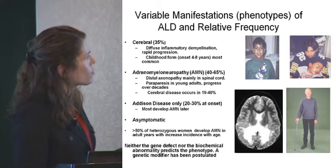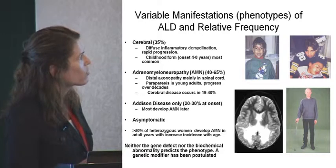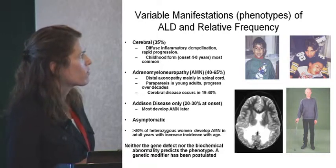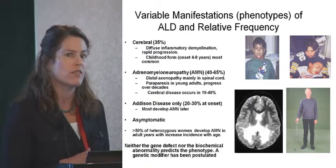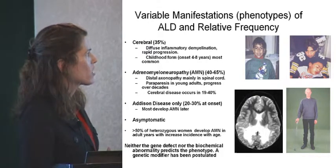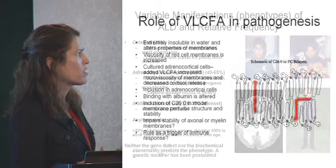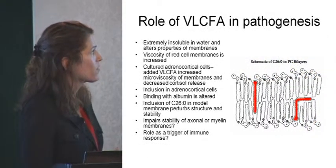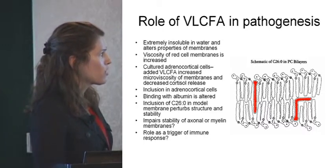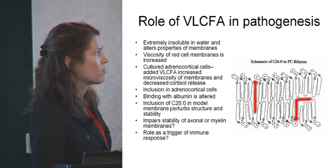Another form is the adult subtype, the adrenal myeloneuropathy, which affects 40 to 45% of individuals. It's more of a distal axonopathy mainly in the spinal cord — and I'll come back to that as a nice model for how we're using some imaging techniques. It affects young adults, and although there's initially no cerebral disease, in 20 to 40% of individuals they will progress to having cerebral disease. In 20 to 30% of individuals there will also be Addison's disease, which mostly will develop into AMN later.